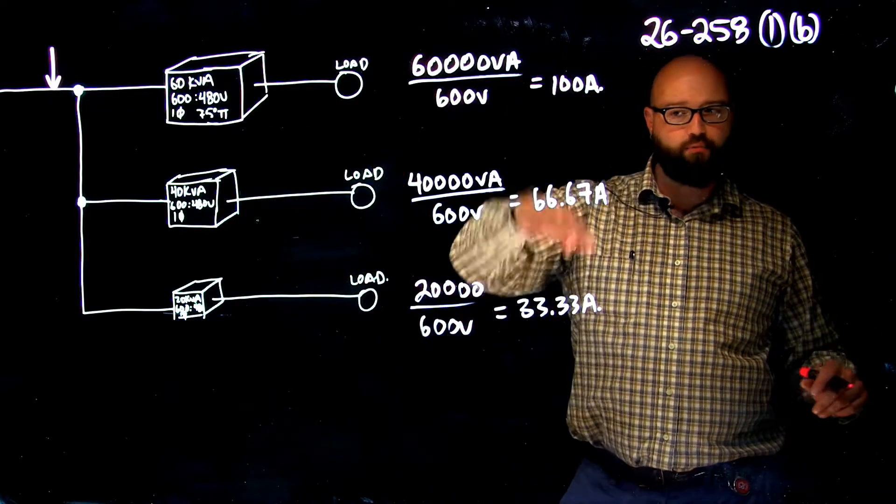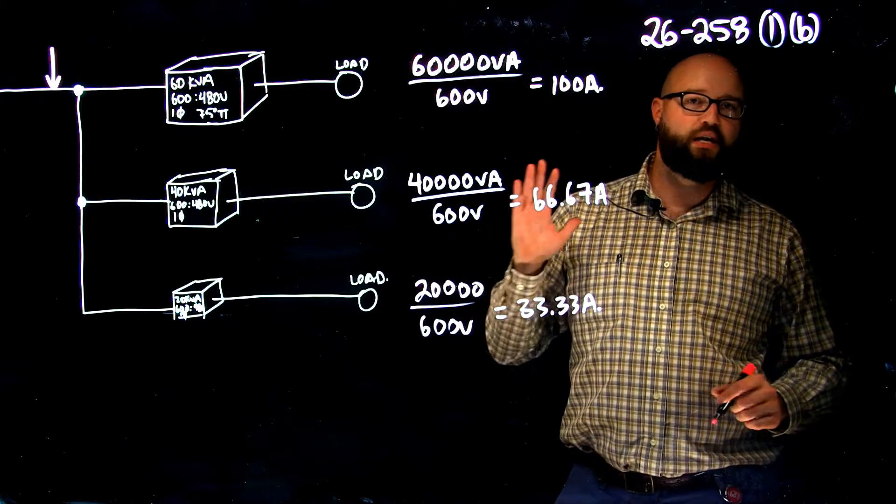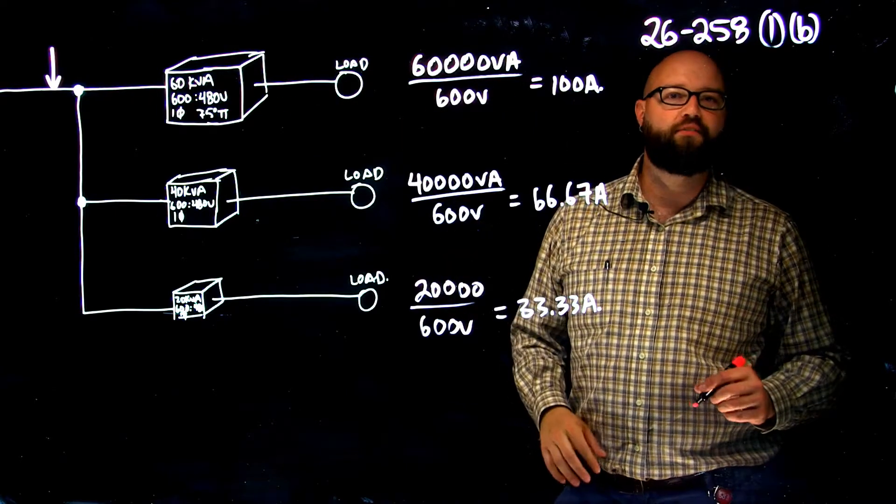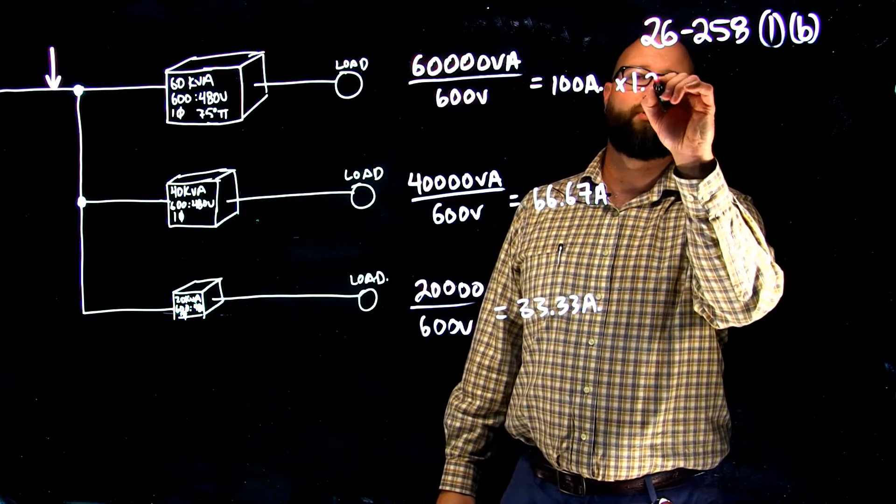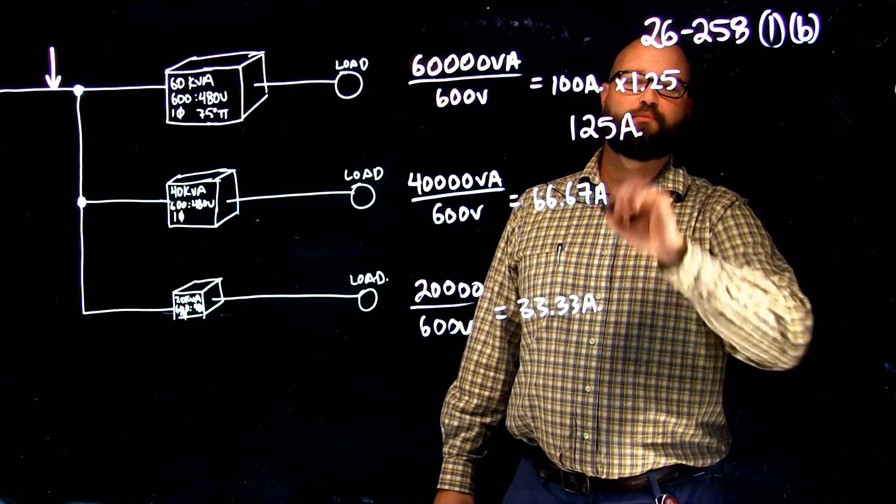Now, what we're going to do is a little different. We're not going to add them all up and take 25% of our largest. We're going to apply that right away. We're going to take our largest rated current, which is our 100 amps from our 60 kVA, and we're going to multiply it by 125% right off the bat. So, we're going to go times 1.25. That gives me 125 amps.